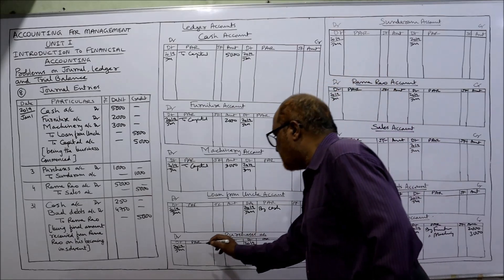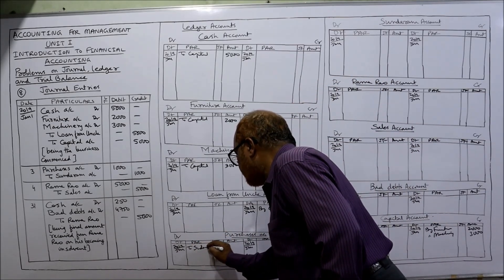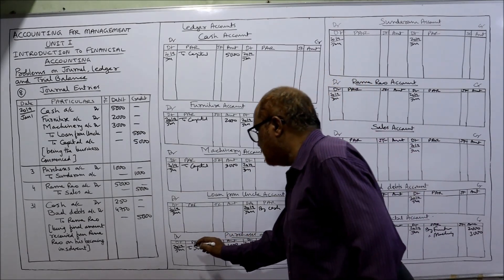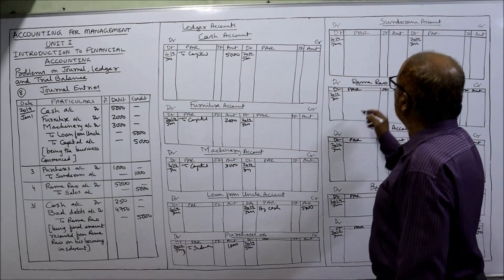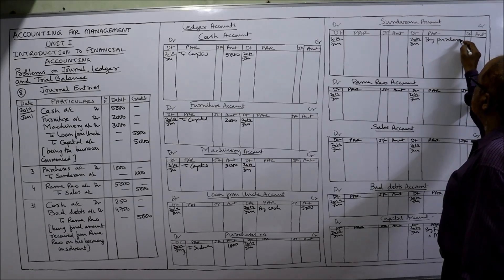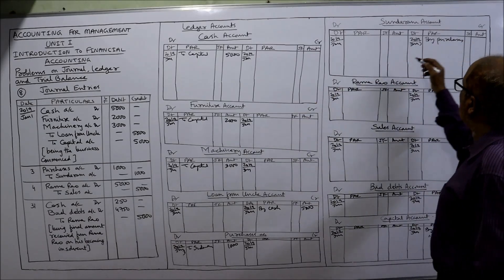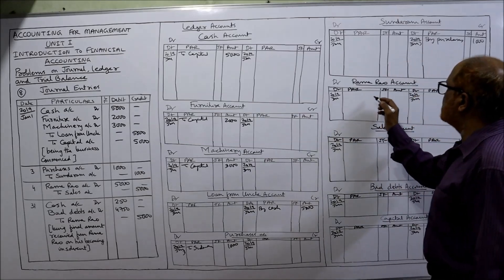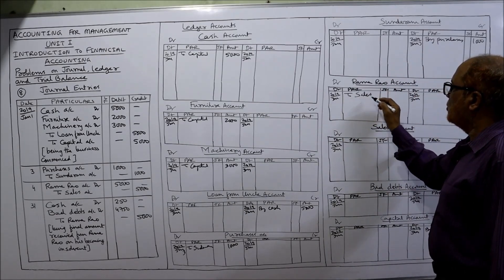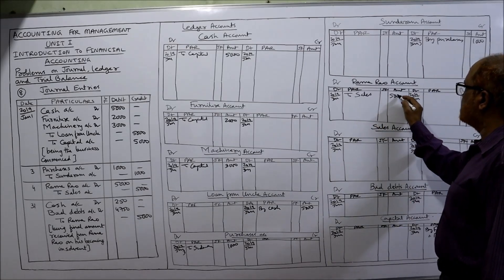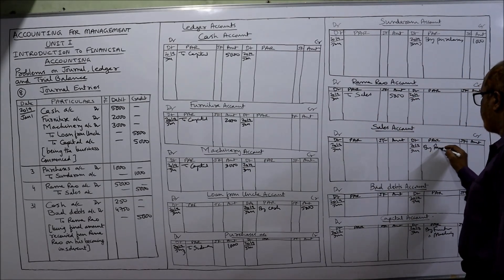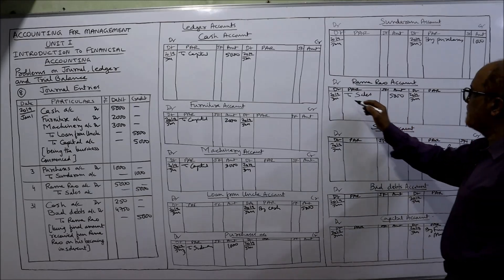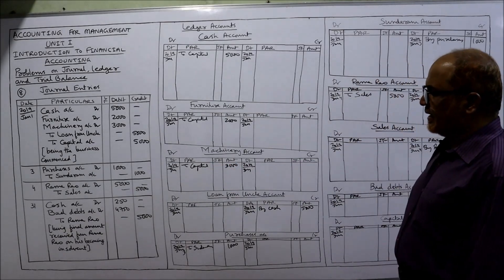Purchases account debit side to Sundaram: 1000, dated third. Sundaram's account is credited by purchases 1000, dated third. Third transaction posted. Fourth: Rama Rao account debit side to sales, 5000 dated fourth. Sales account is credited by Rama Rao 5000 on the fourth.